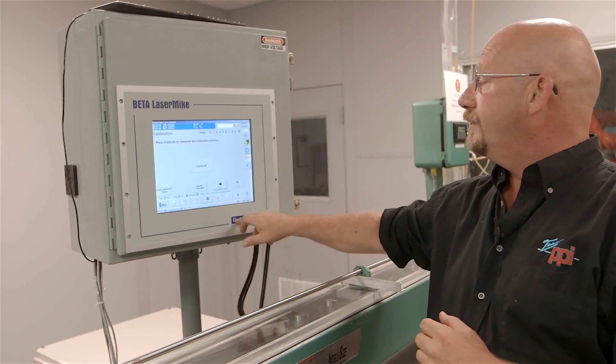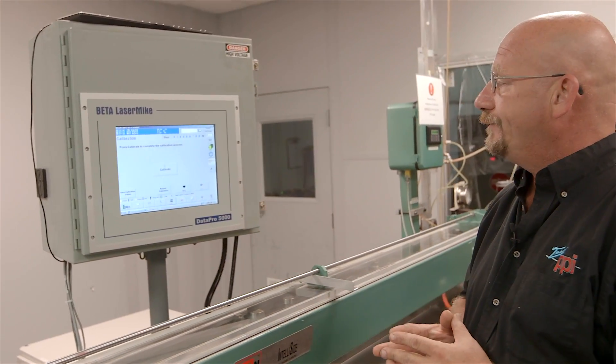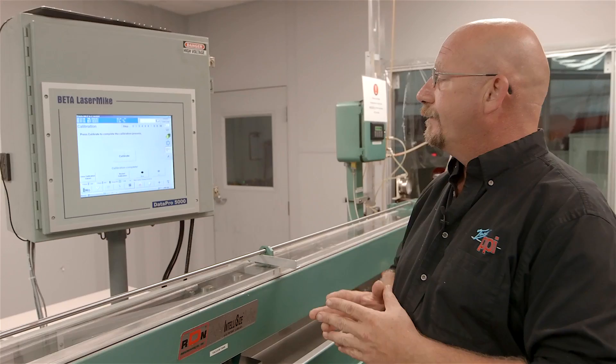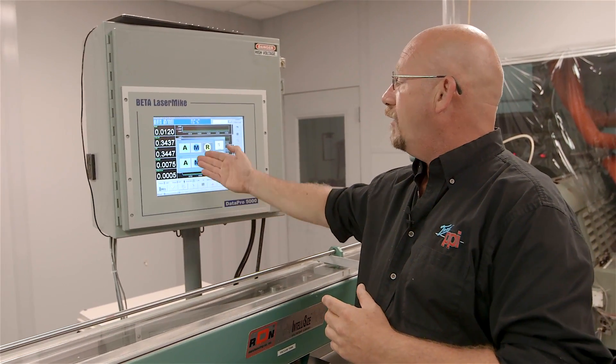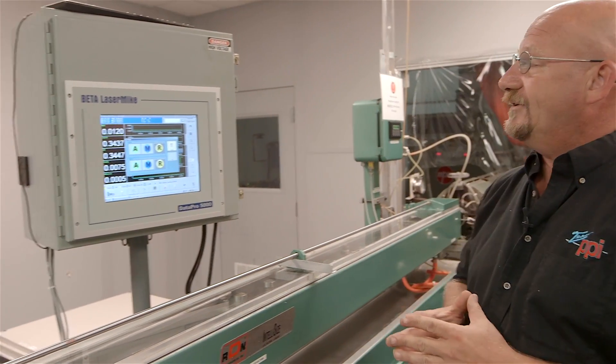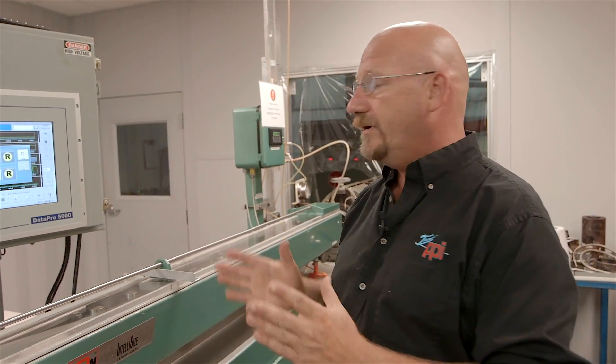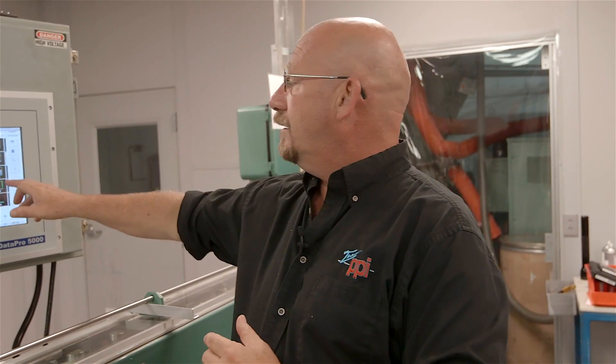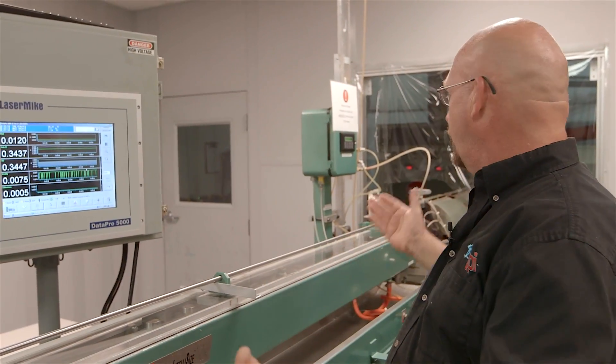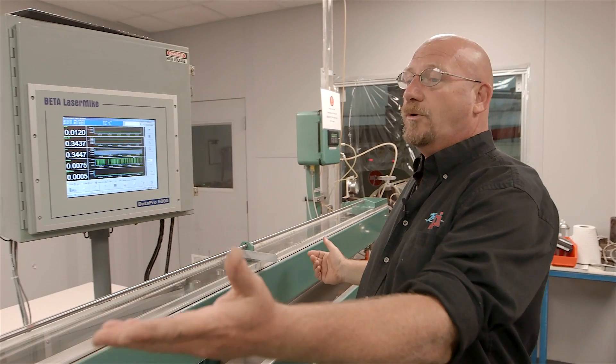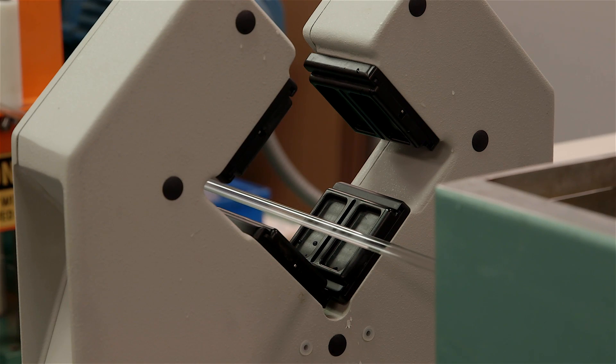We'll enter that in, we'll calibrate the system, now the system's calibrated. Once it's calibrated, we can go in and we can turn on the system to run automatic. Now it's a hands-free measuring system that is measuring the product. It's controlling the vacuum and the puller to maintain our set points that we've set up for our production run.